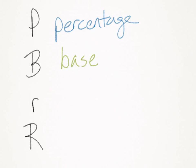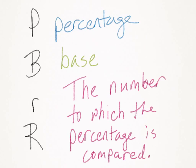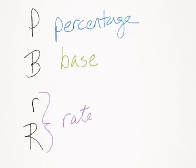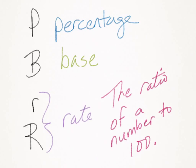Base is the number to which the percentage is compared, and this will make sense in just a few minutes. The last two variables are interchangeable. There's a little r and a big R, and they both refer to rate. And the rate is nothing more than the ratio of a number to 100.